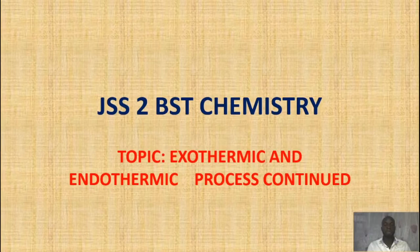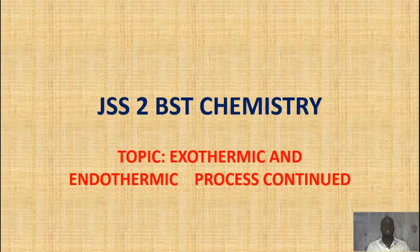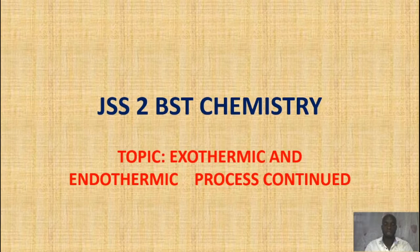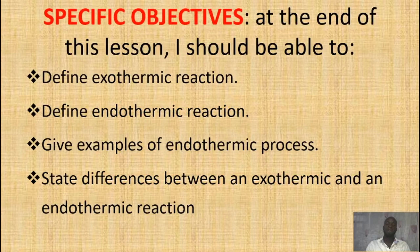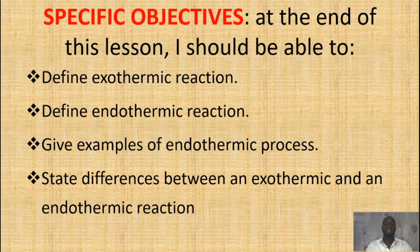Good students, you are welcome to our BST chemistry class today. This class is for SS2 students. Our topic today is a continuation of what we started during our last video: endothermic and exothermic processes. Today our lesson is based on the following objectives — that at the end of this lesson, students should be able to define exothermic reaction and endothermic reaction, give examples of endothermic processes, and state differences between an exothermic and an endothermic reaction. These are our objectives.